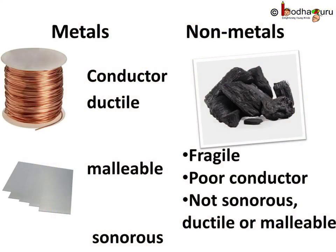We actually know a lot about elements. We know that elements are metals, nonmetals, or metalloids. Metals have lustre or shine. They conduct heat and electricity. They can be drawn into wires, which means they are ductile. They can be hammered into thin sheets, which means they are malleable.